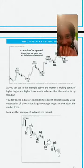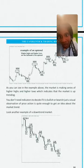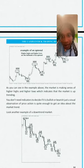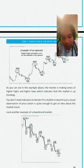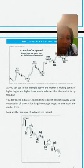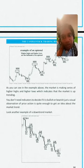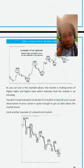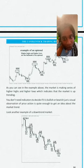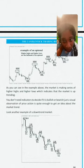Here's an example of an uptrend — at those parts where they put the little boxes, that is the highest high in that part of the chart. You don't need indicators to know if the market is in an uptrend or downtrend — you can just look at it visually. It also depends on what time frame you're looking at.